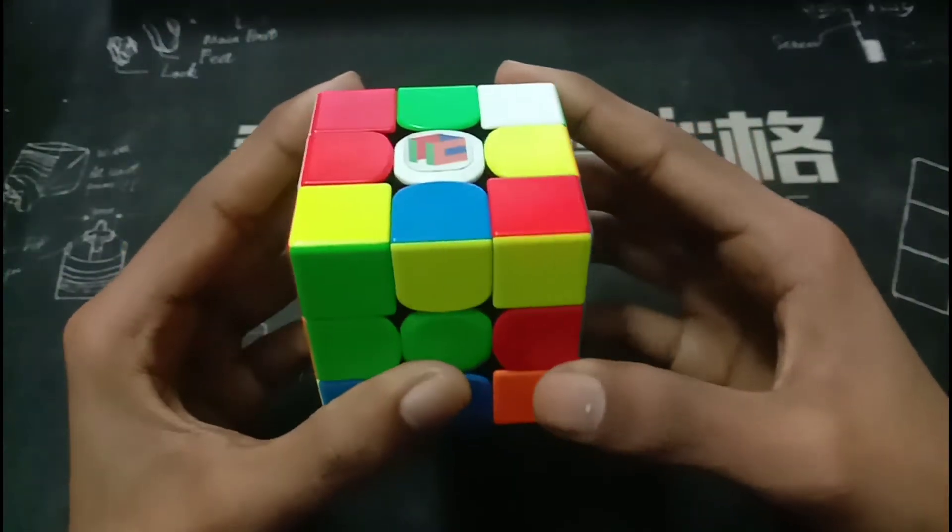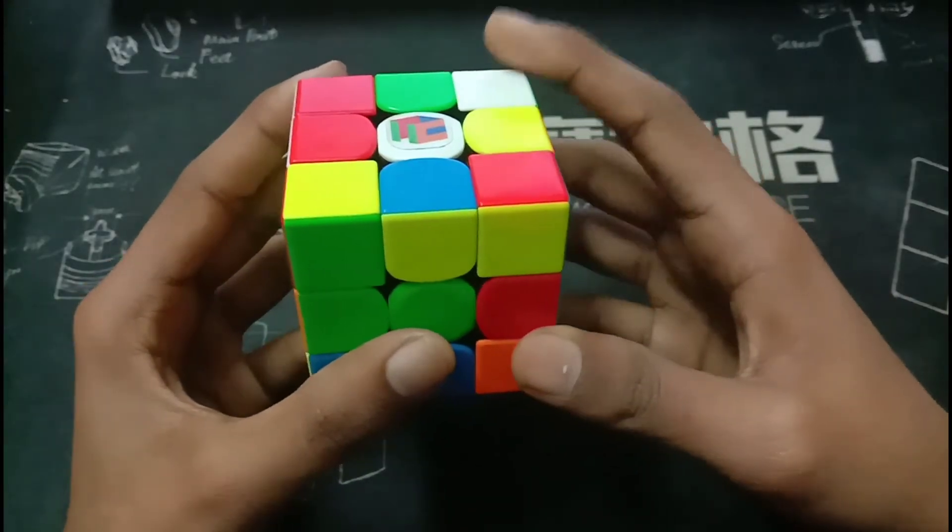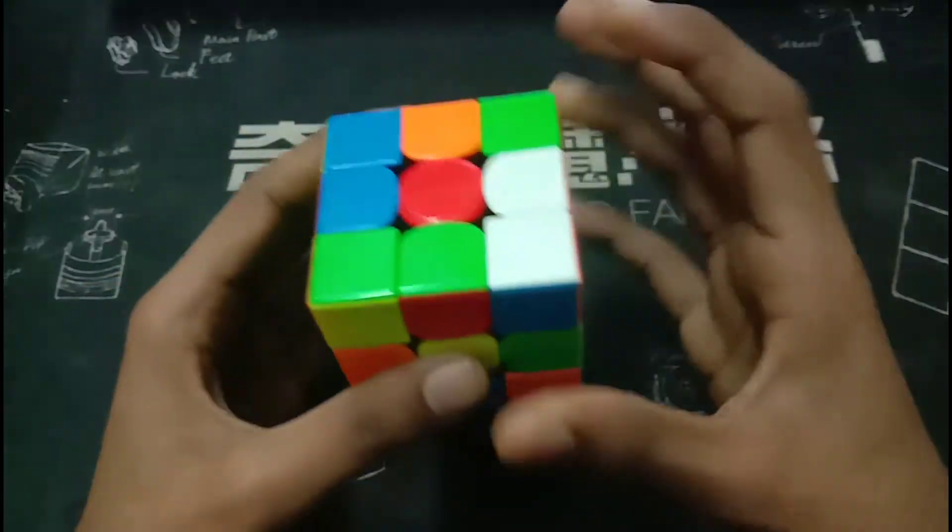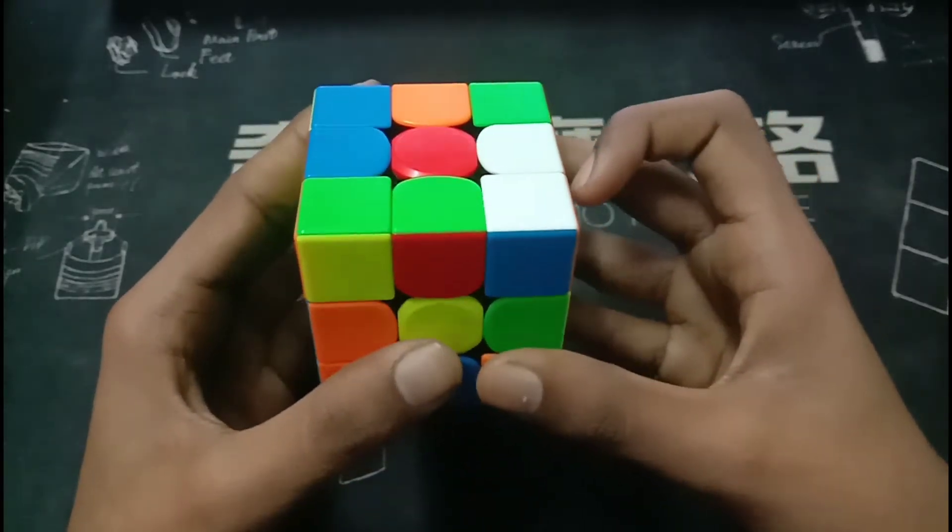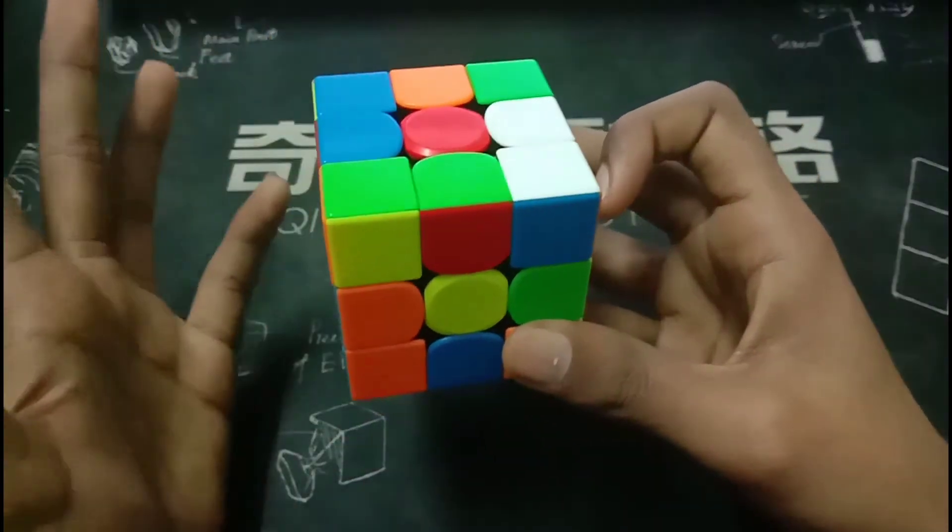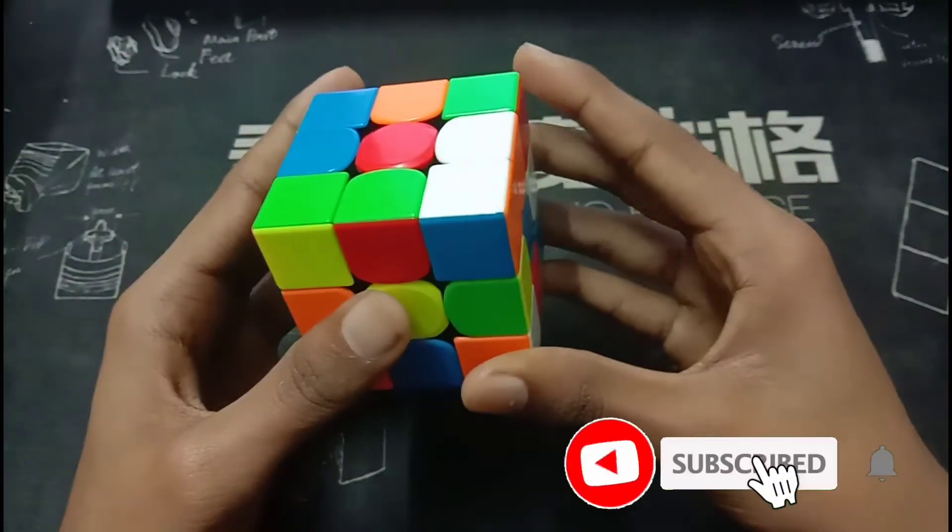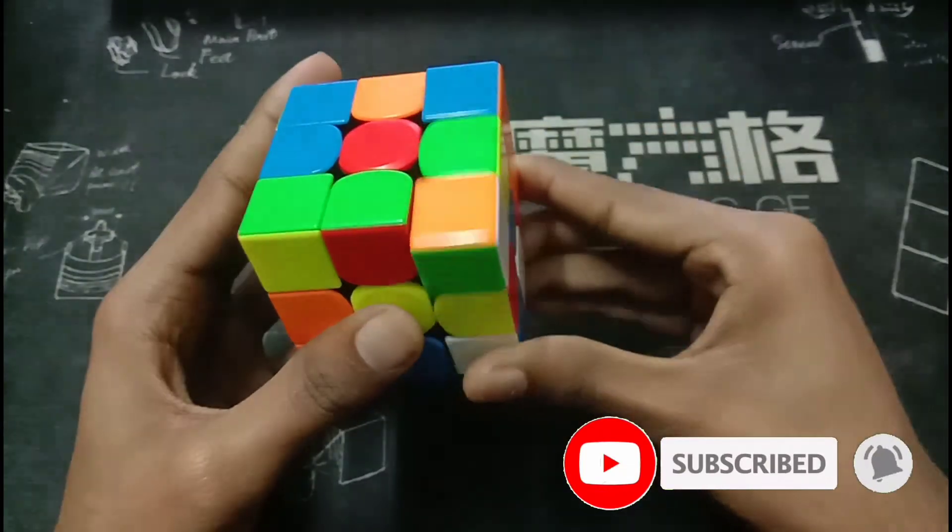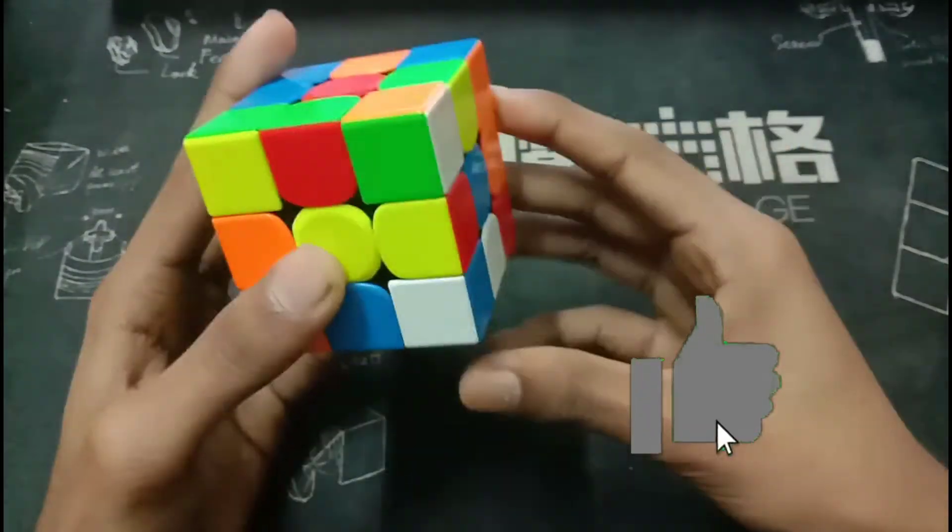Now here is where Felix shows his class. For inspection he does X, Z' and he does the cross from this angle. Like imagine a white cross from this angle. So what he first does is he does an R to insert this one, the orange edge.